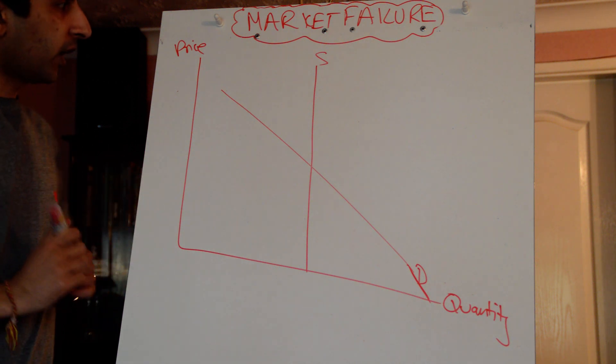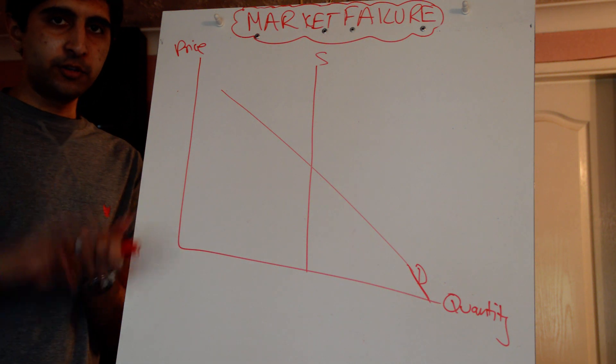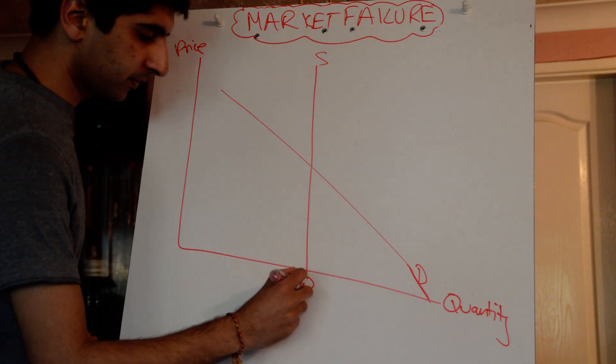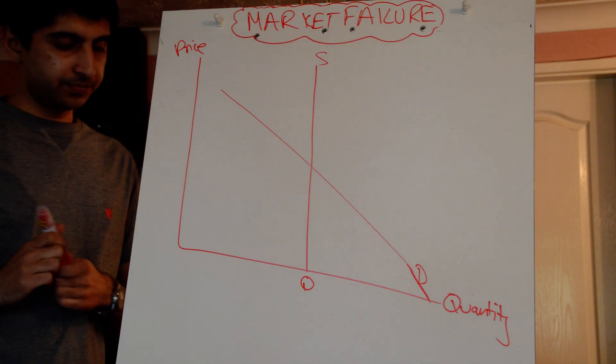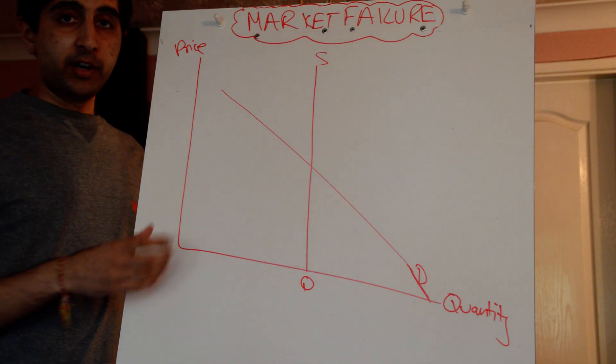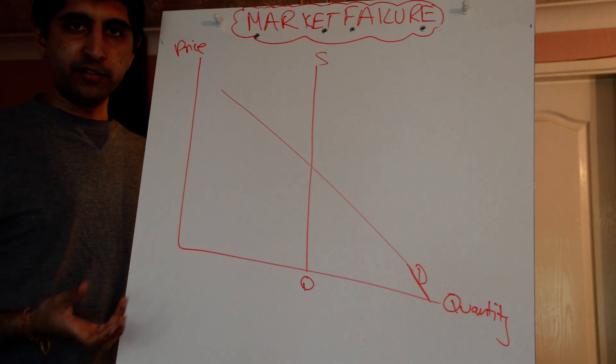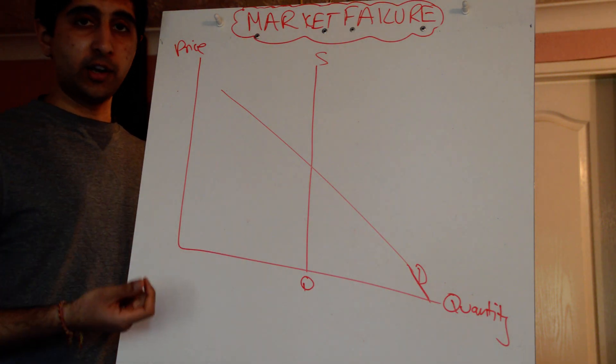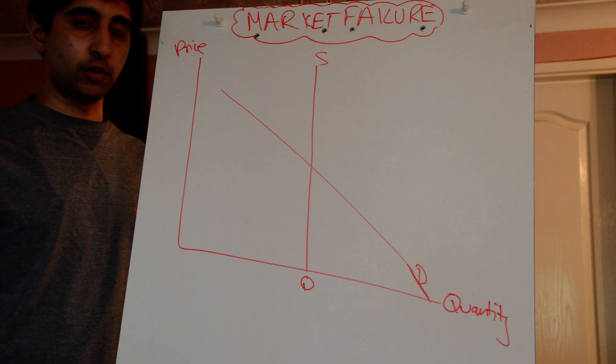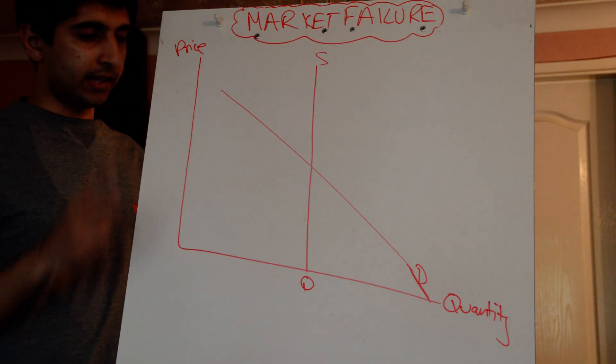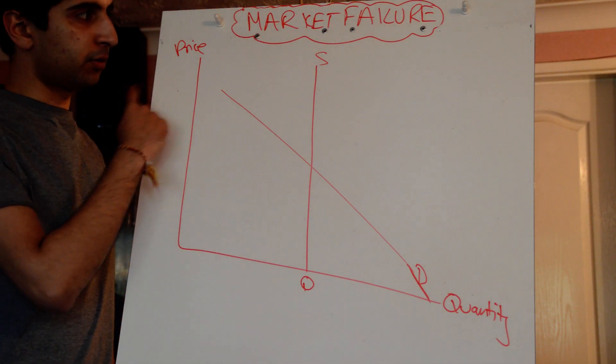So if the government provides all the resources, there could be two reasons for that. One, either the quantity level currently being provided by the private sector is not high enough, and it doesn't think subsidies are going to be good enough to increase the quantity level of these goods. So the government decides to just provide them all.